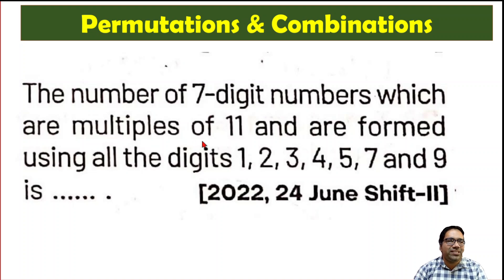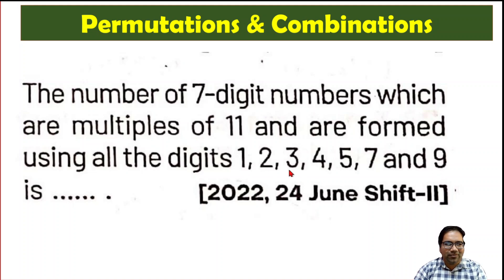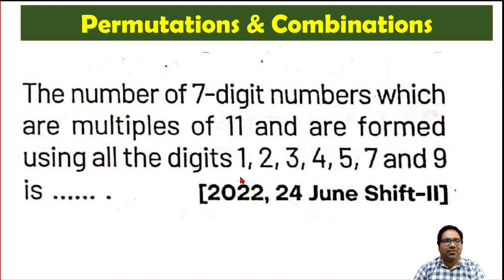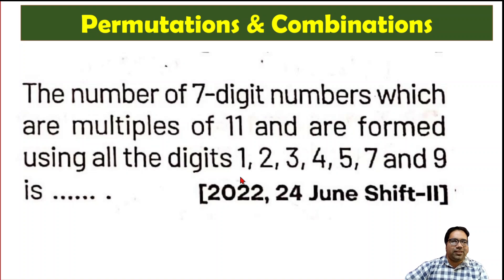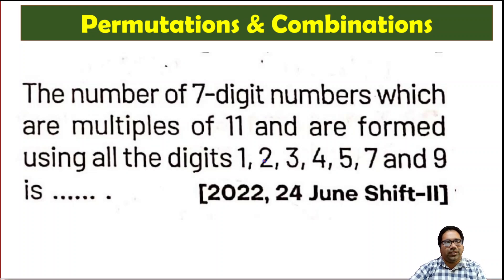Find the number of 7-digit numbers which are multiples of 11, formed using only the digits 1, 2, 3, 4, 5, 7, and 9 — these 7 digits. Obviously, there is no repetition; we have to use all 7 numbers and the results should be multiples of 11.